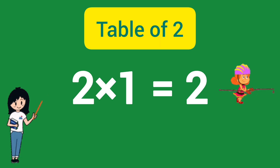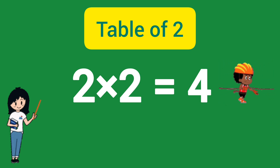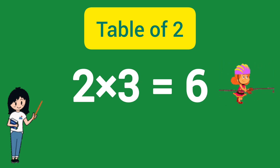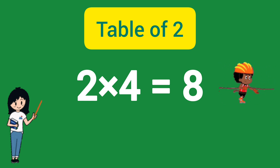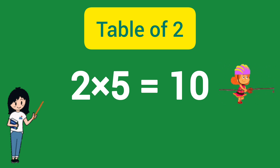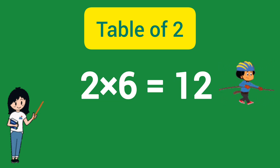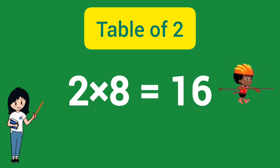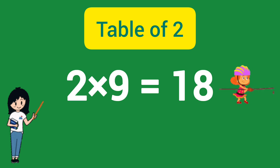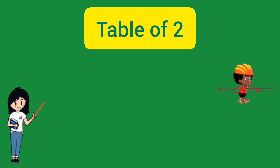2×1=2, 2×2=4, 2×3=6, 2×4=8, 2×5=10, 2×6=12, 2×7=14, 2×8=16, 2×9=18, 2×10=20.